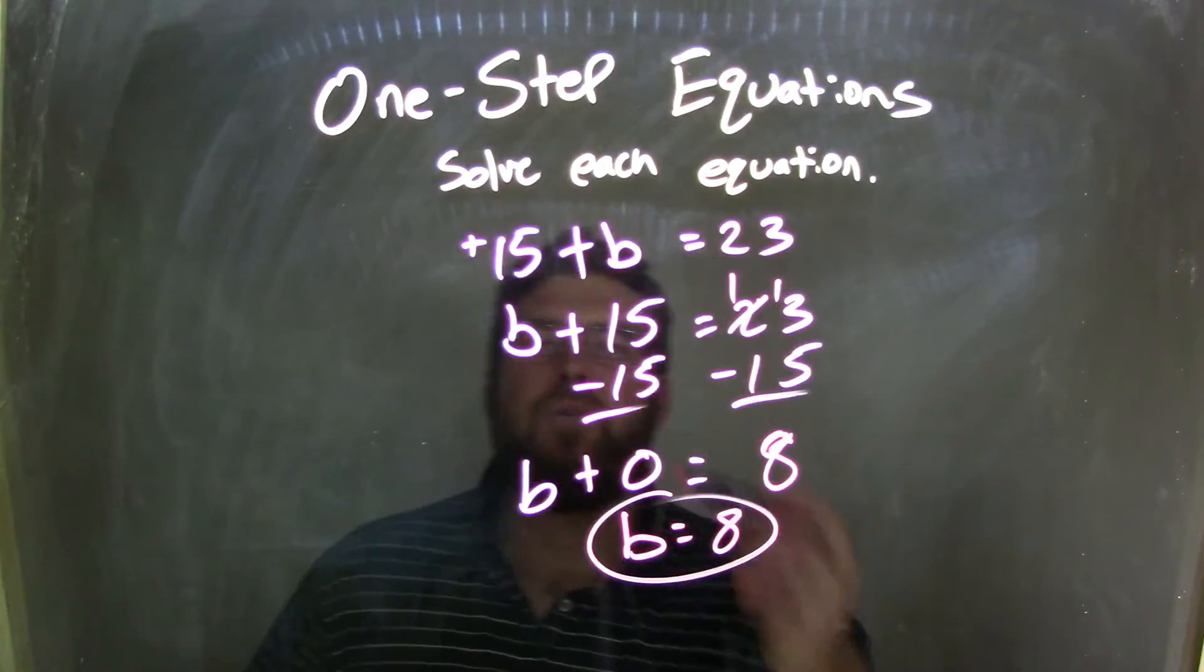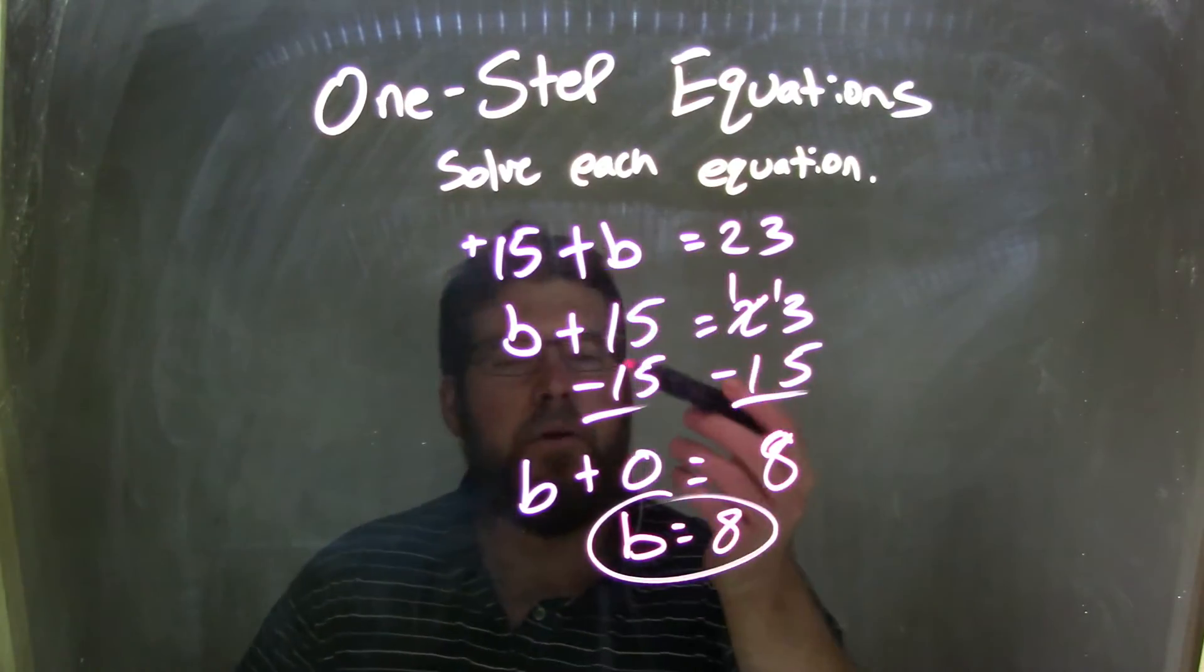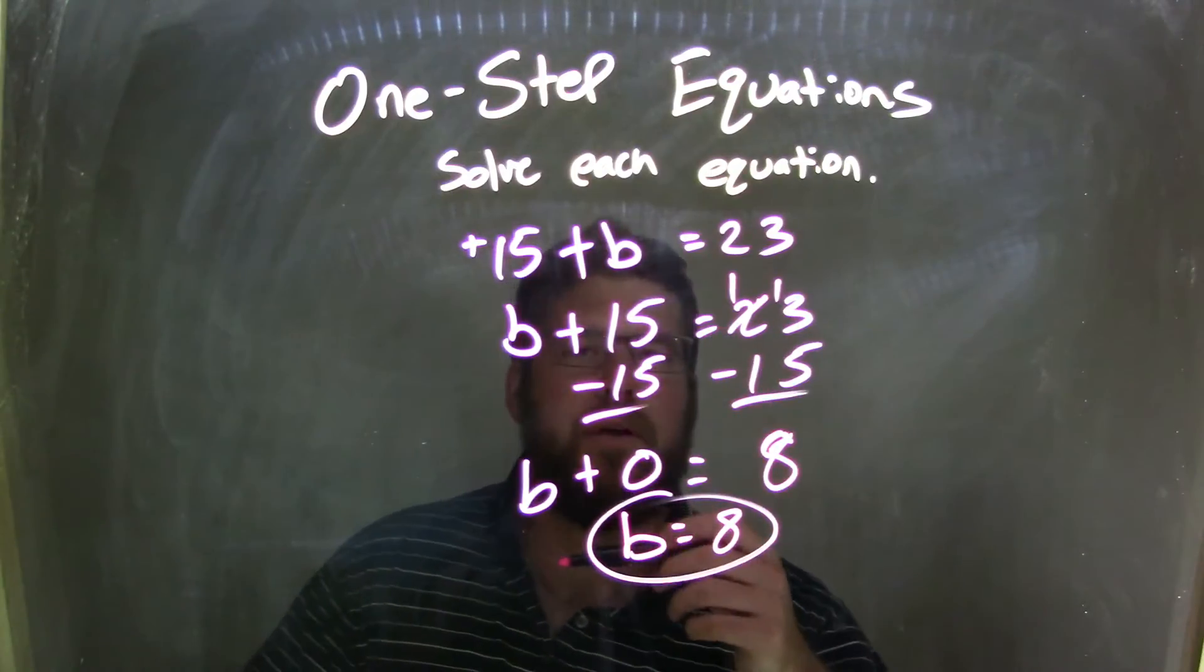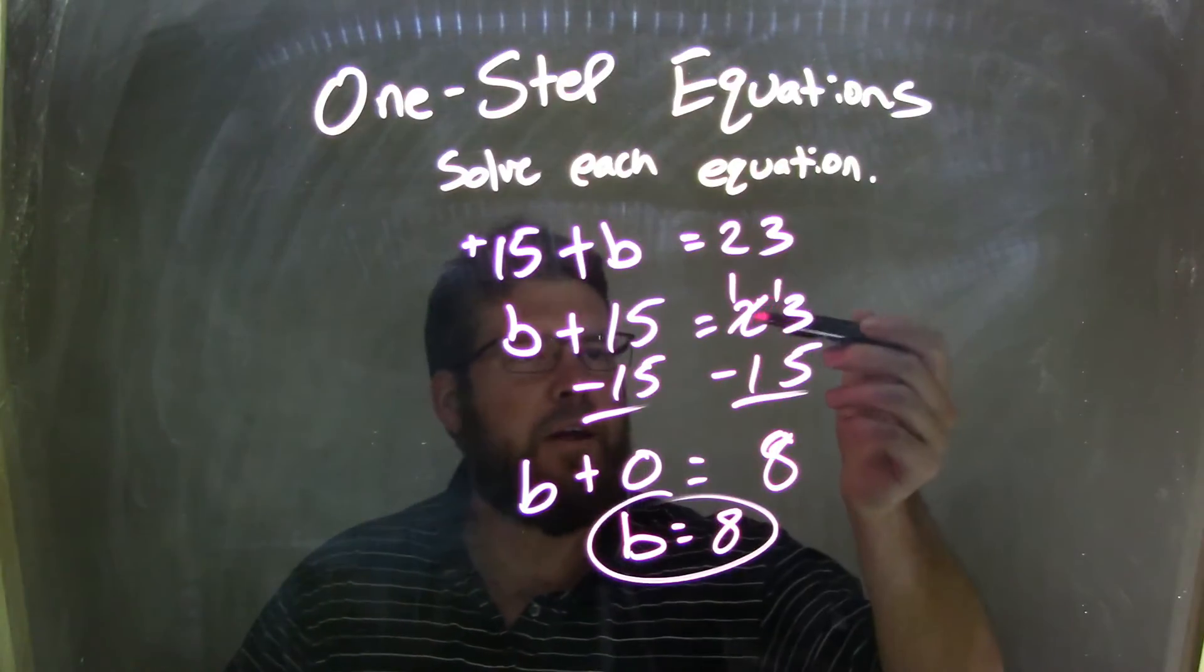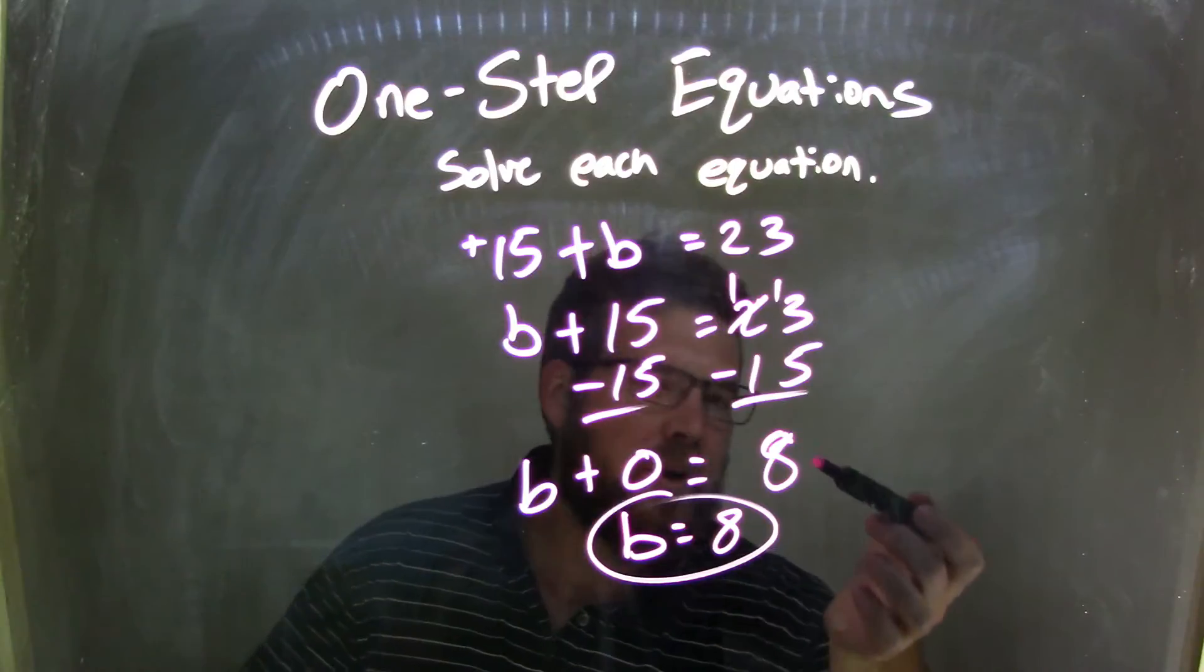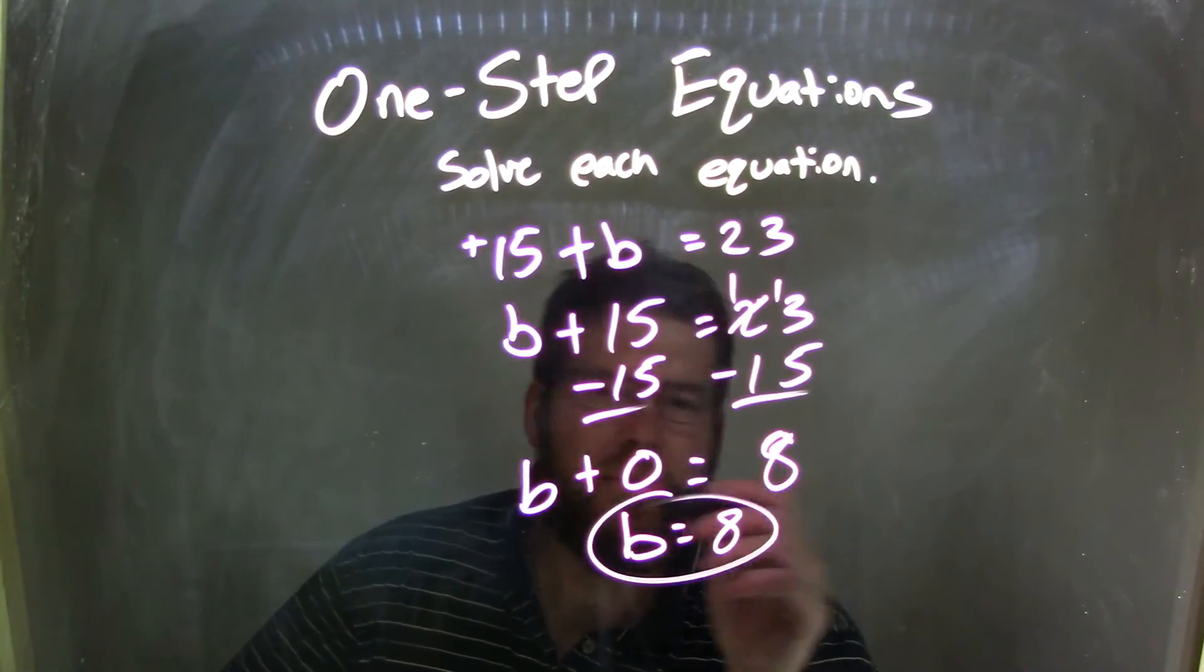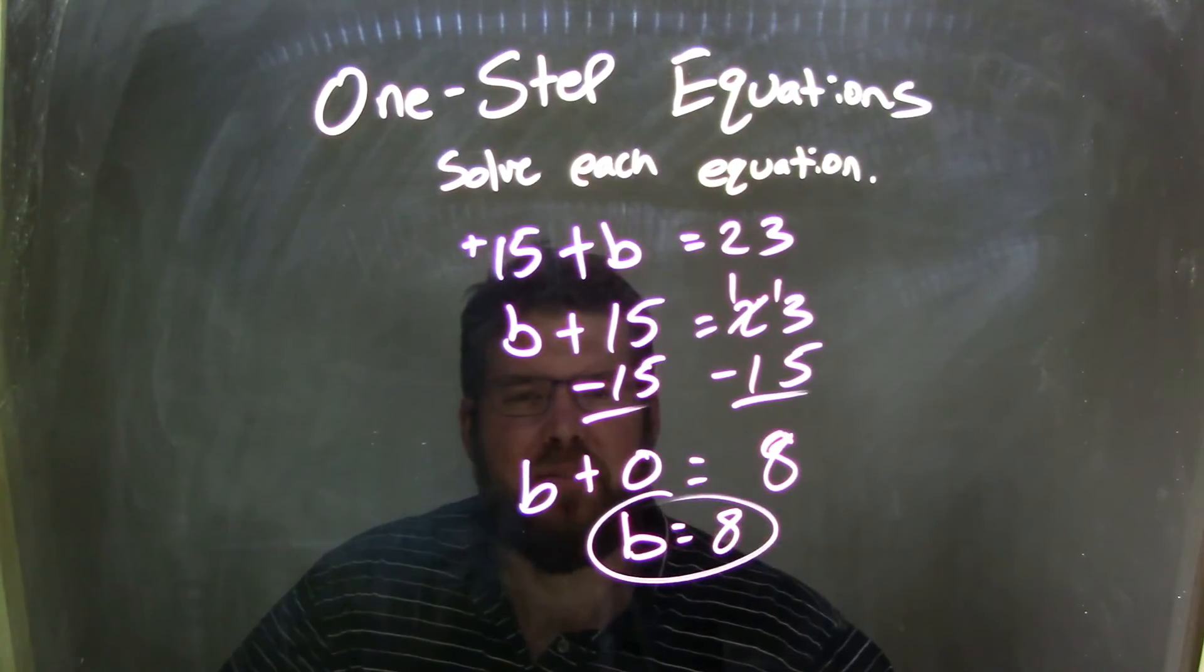So let's recap. We started with 15 plus b equals 23. I used the commutative property to rearrange it to be b plus 15 equals 23. I then subtracted 15 from both sides. Now you might be quick and can do 23 minus 15 to get 8, and that's fine. I used the traditional method and still got 8. So we're left with b plus 0 equals 8. Adding 0 doesn't change anything, so we're left with b equals 8 as our final answer.